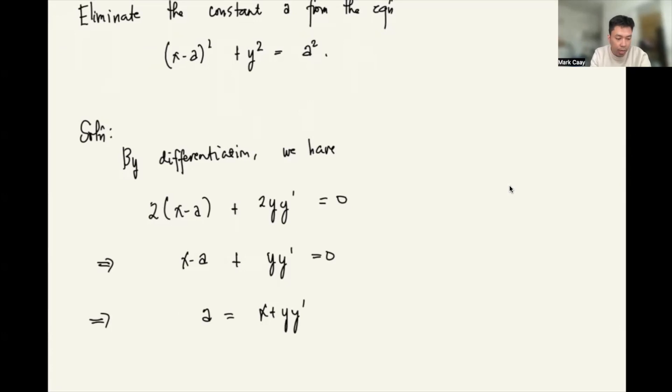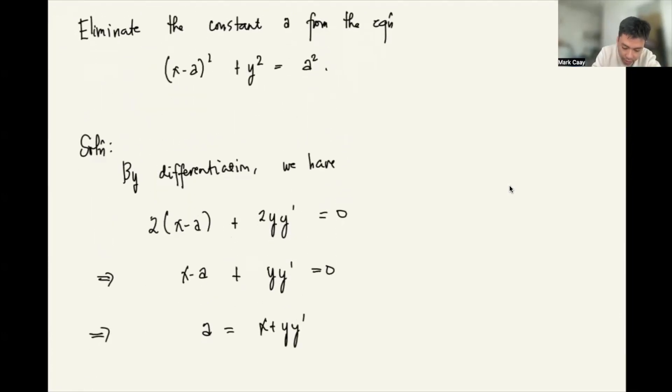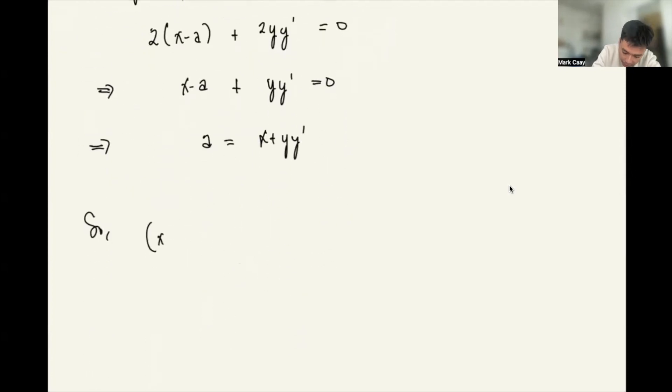But we're not done yet. We're supposed to be eliminating A, right? So x minus A, that's x minus x plus y y prime squared plus y squared